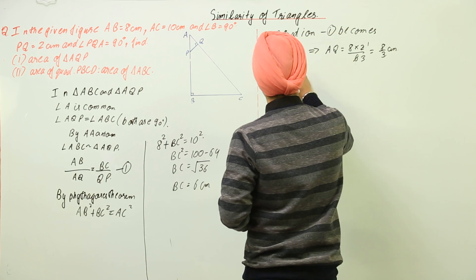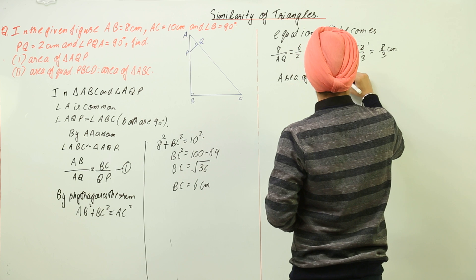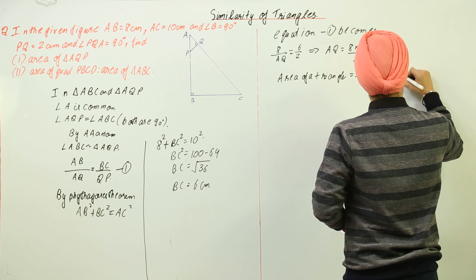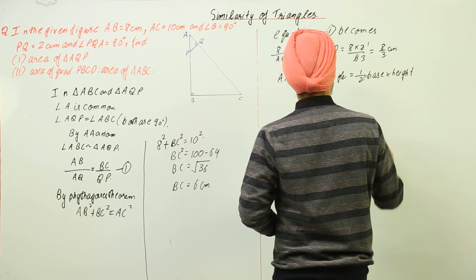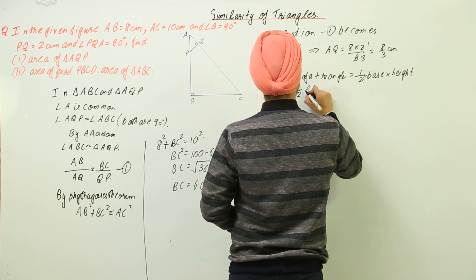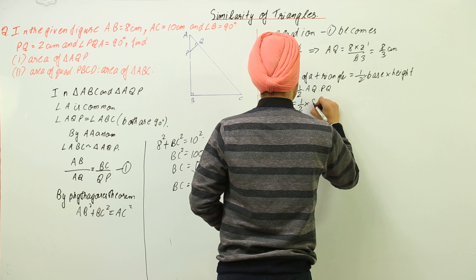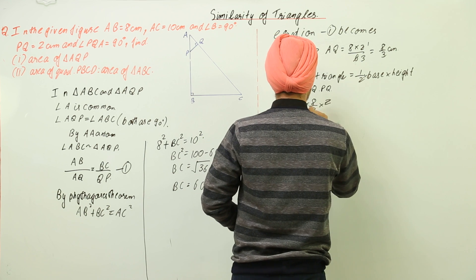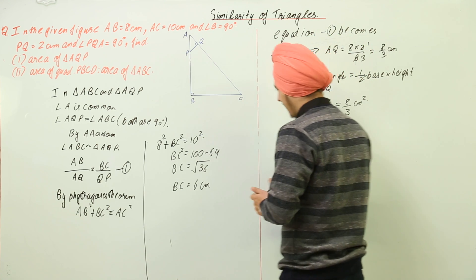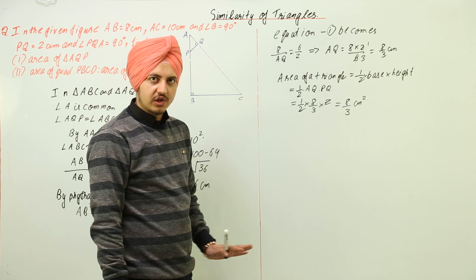The area of triangle AQP equals half into base into height, which is half into AQ into PQ. That is half into 8/3 into 2, which equals 8 by 3 centimeter square. So the area of triangle AQP is 8/3 cm².